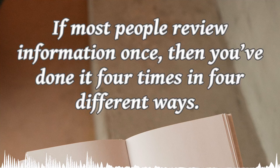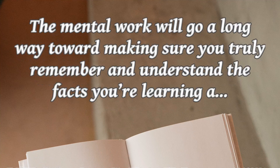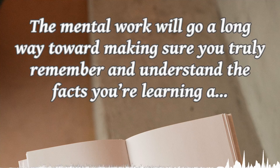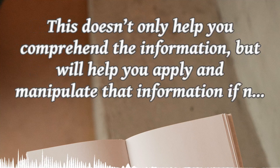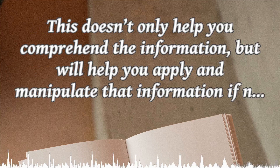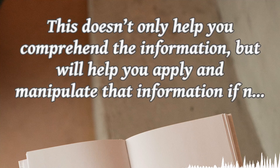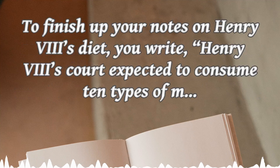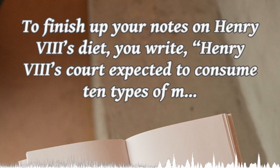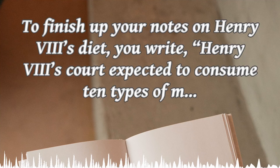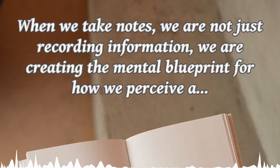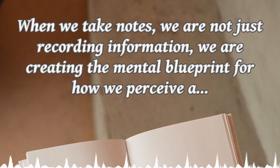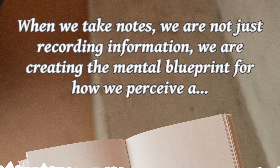Step 4. The final step of my method is to take a break every page, or applicable chunk, to write a summary of the information from your second and third steps. Also, make sure to try to address the questions you wrote in the second step, if they are still applicable. The final step creates a fourth opportunity for you to revisit, synthesize, and transform the information you're learning on paper. If most people review information once, then you've done it four times in four different ways. The mental work will go a long way toward making sure you truly remember and understand the facts you're learning and the implications of that information. This doesn't only help you comprehend the information, but will help you apply and manipulate that information if necessary.